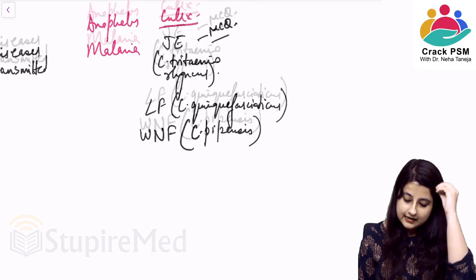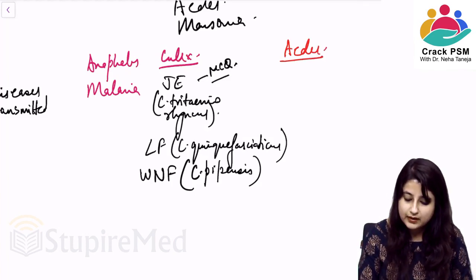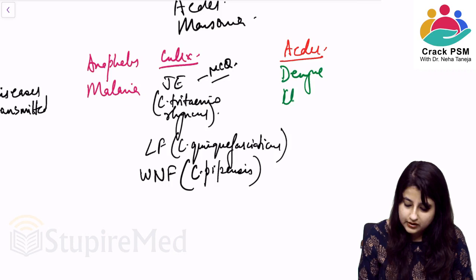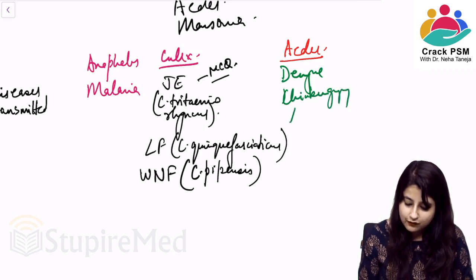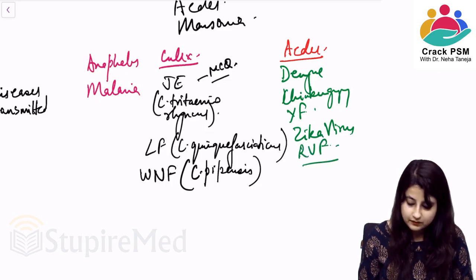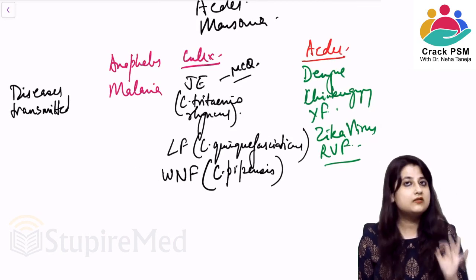Now for Aedes — think about the diseases it transmits. Aedes transmits dengue, chikungunya, yellow fever, Zika virus, and also Rift Valley fever. These are the diseases transmitted by Anopheles, Culex, and Aedes.